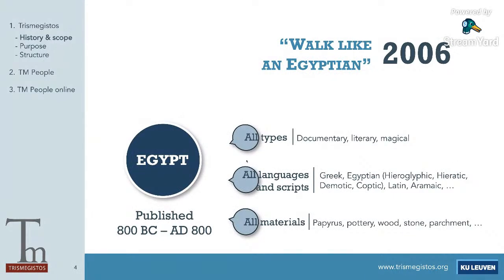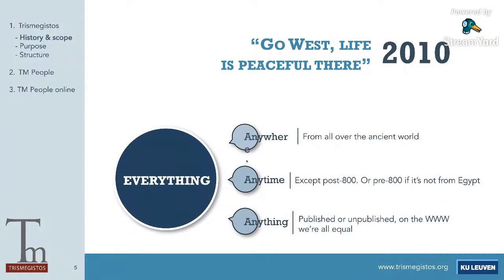In 2006, Trismegistos went live. At the time it contained all published documents between 800 BC and AD 800. There was a chronological limitation, but they didn't discriminate on the type of text — documentary texts, literary texts, magical texts are all in there, along with all languages and scripts attested in Egypt, and all writing materials. In 2010, when Trismegistos got involved in projects focusing on Latin epigraphy, it started to expand. Since then, there are no restrictions except for the chronological focus of 800 BC to AD 800.